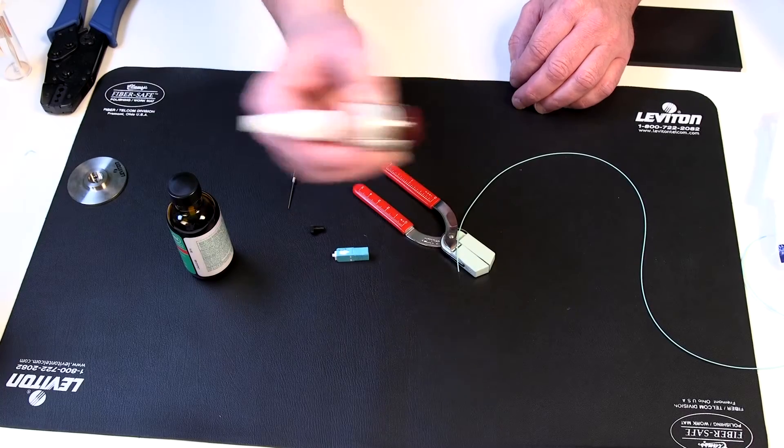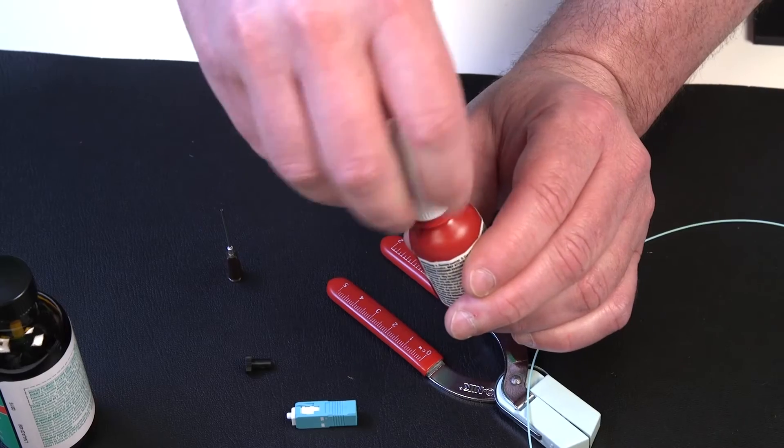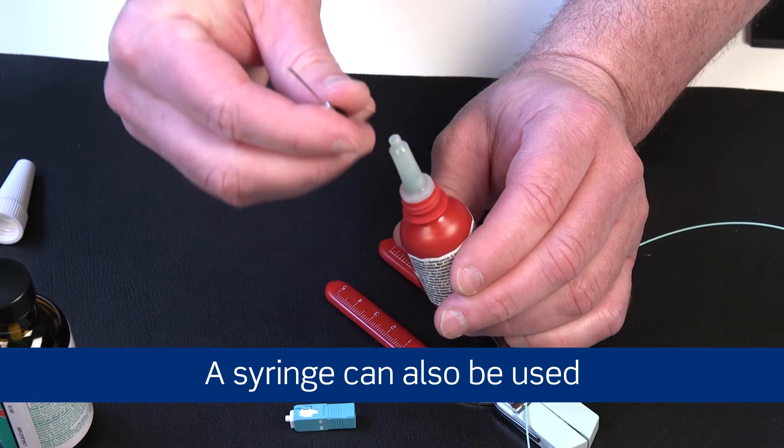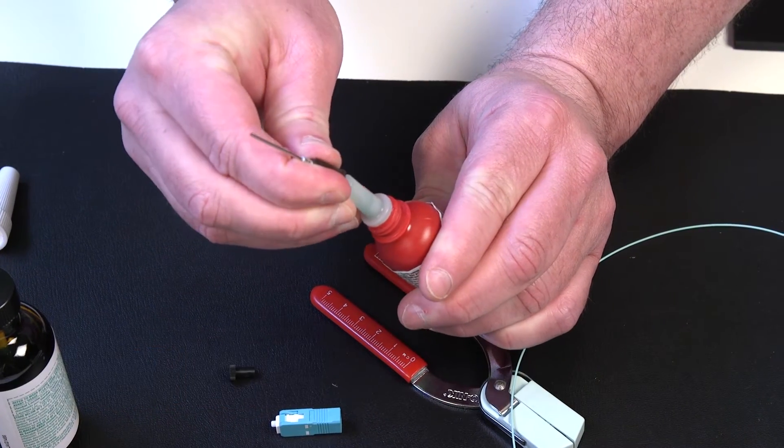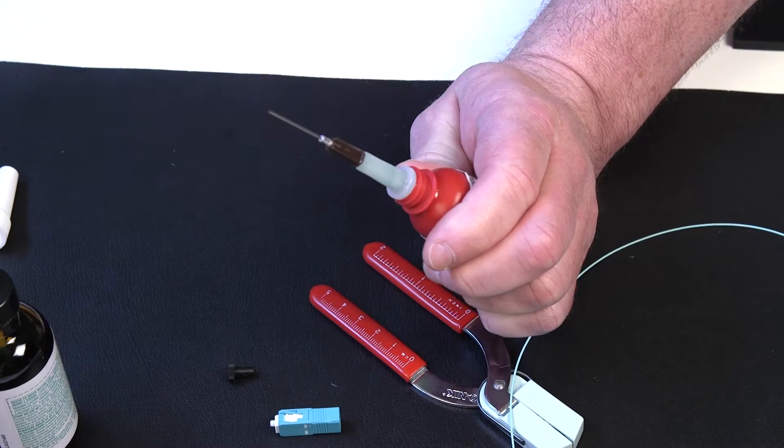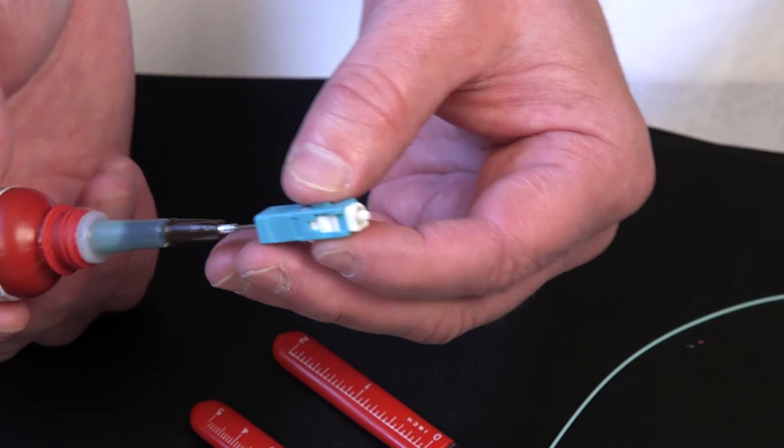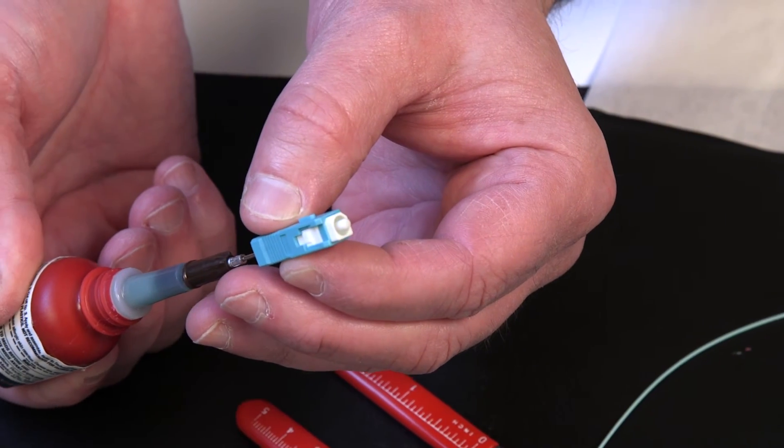Shake the adhesive bottle before using. Remove the cap and attach the needle by pressing it gently onto the top of the bottle until you feel it set into place. Insert the needle into the back of the connector and squeeze the bottle gently, injecting the adhesive.